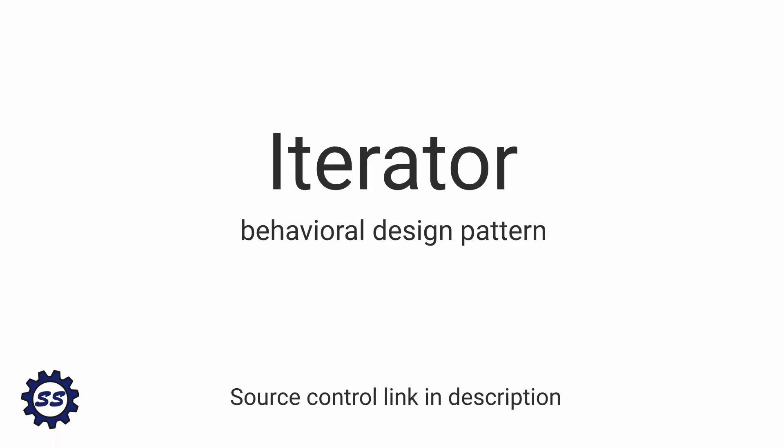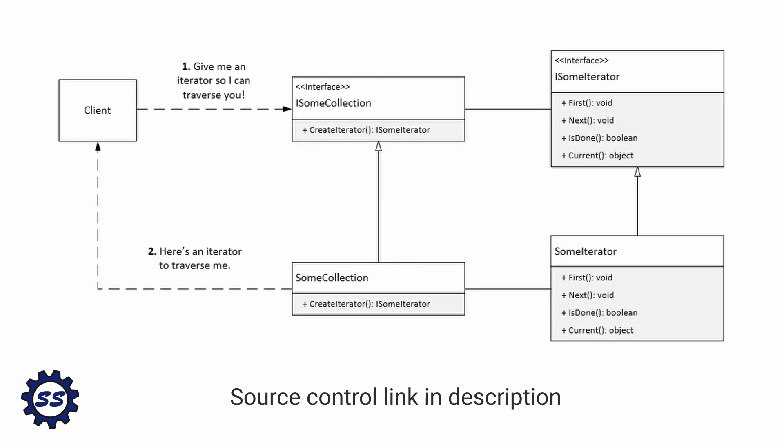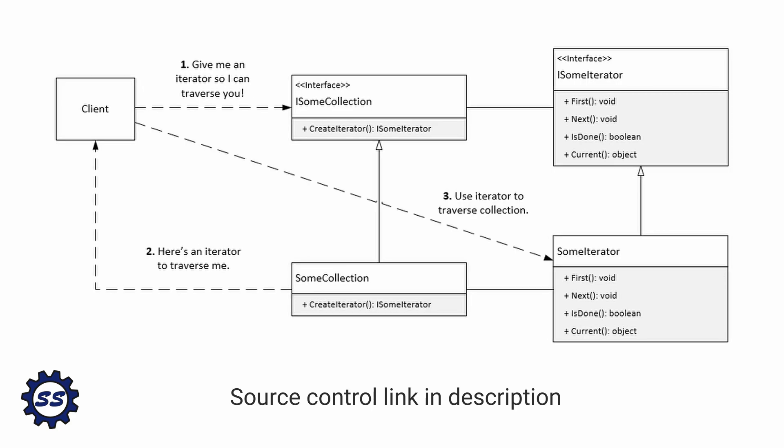The iterator design pattern is a behavioral design pattern that allows clients to traverse various different collections without having to know about the collection's underlying representation. What happens is the client asks whatever collection it's dealing with to give back an iterator that will allow it to traverse that collection, and then the client simply uses that iterator to traverse the collection.